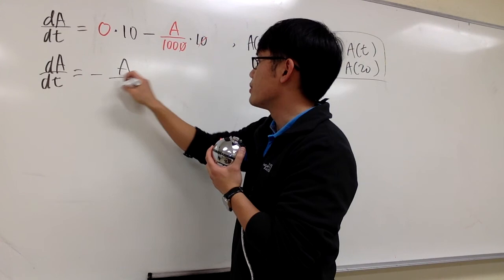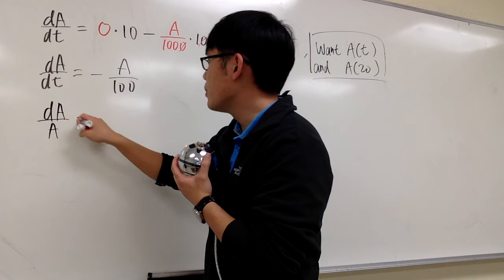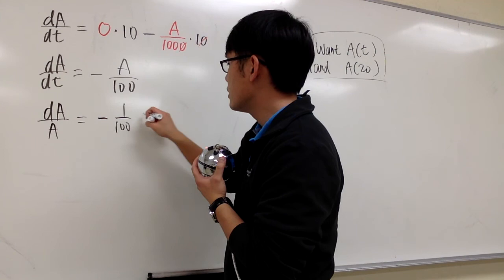And we are just going to collect all the A's on one side, and then bring the dT to the other side. So I'll divide both sides by A, we have dA over A, that will be multiplied by dT to the right-hand side, so we have negative 1 over 100 dT.